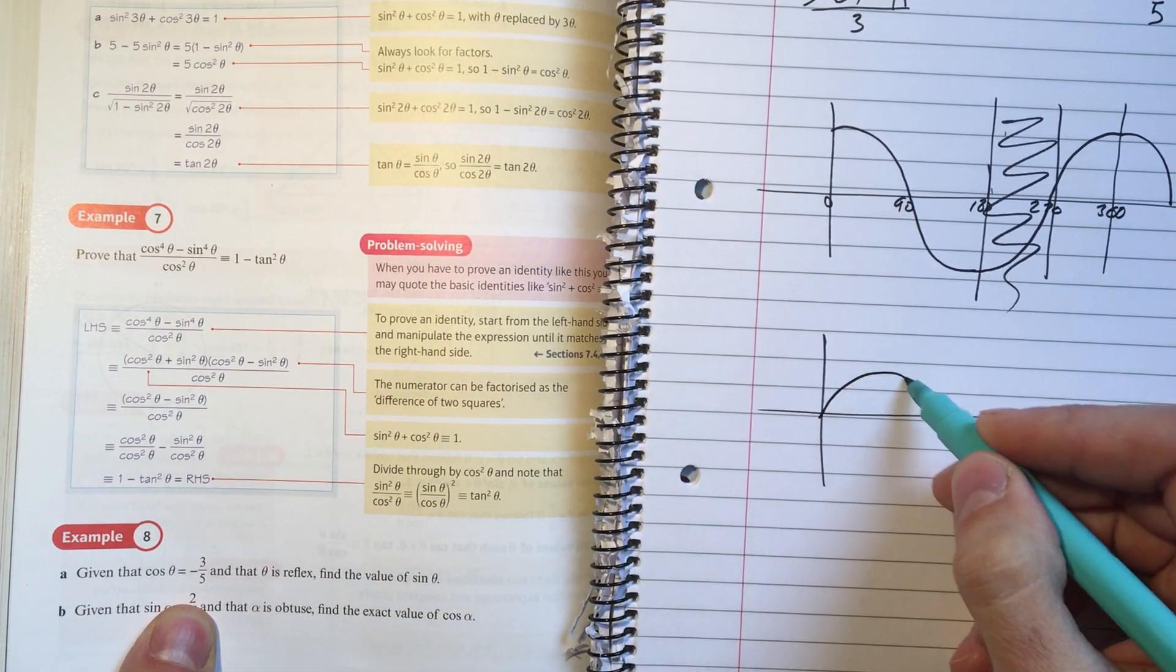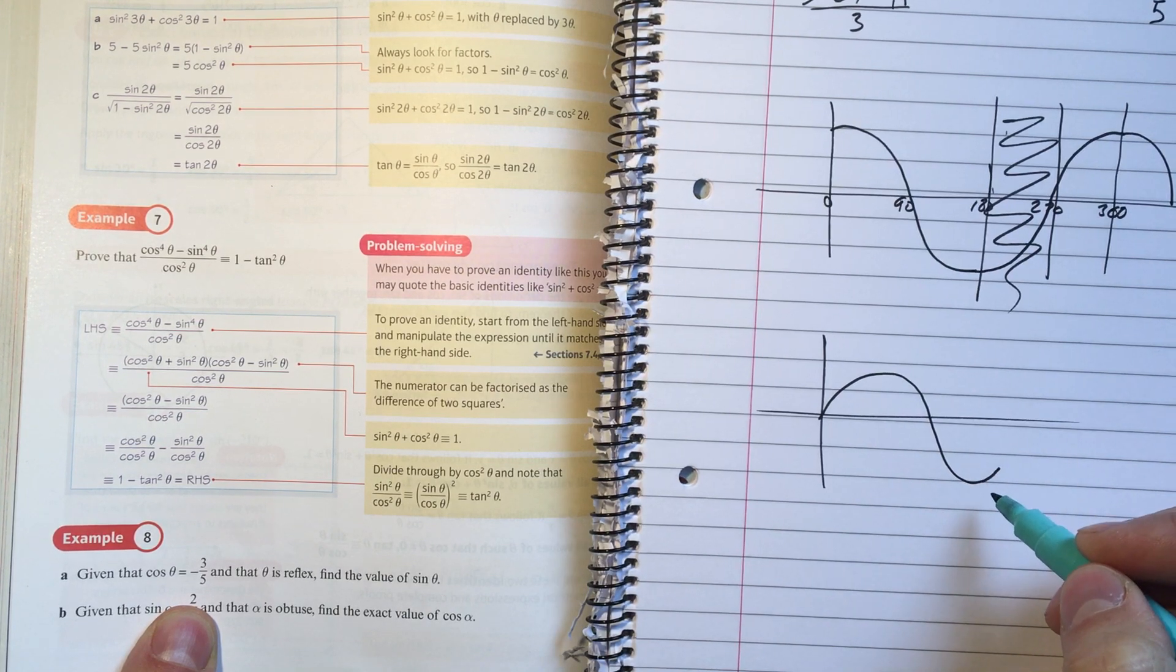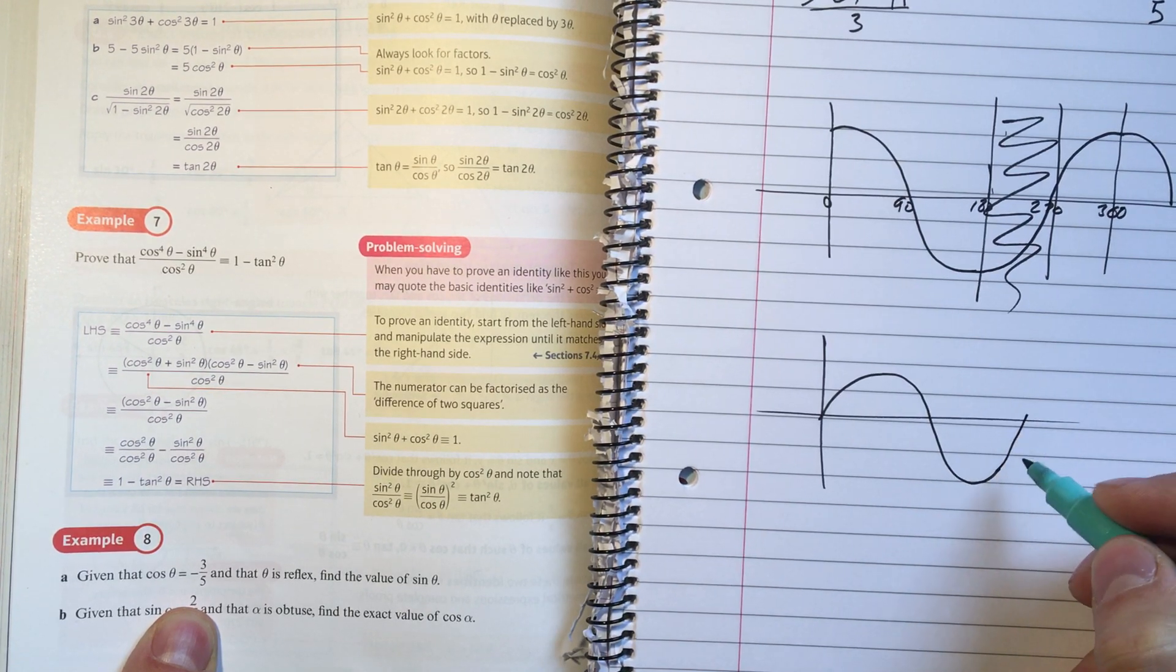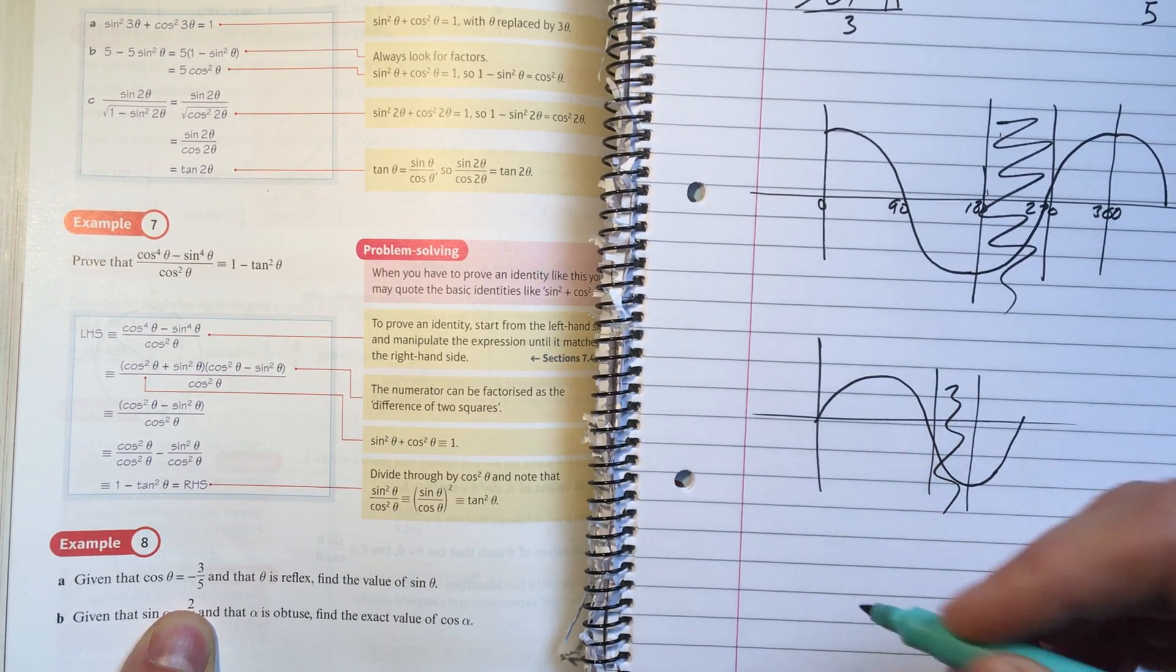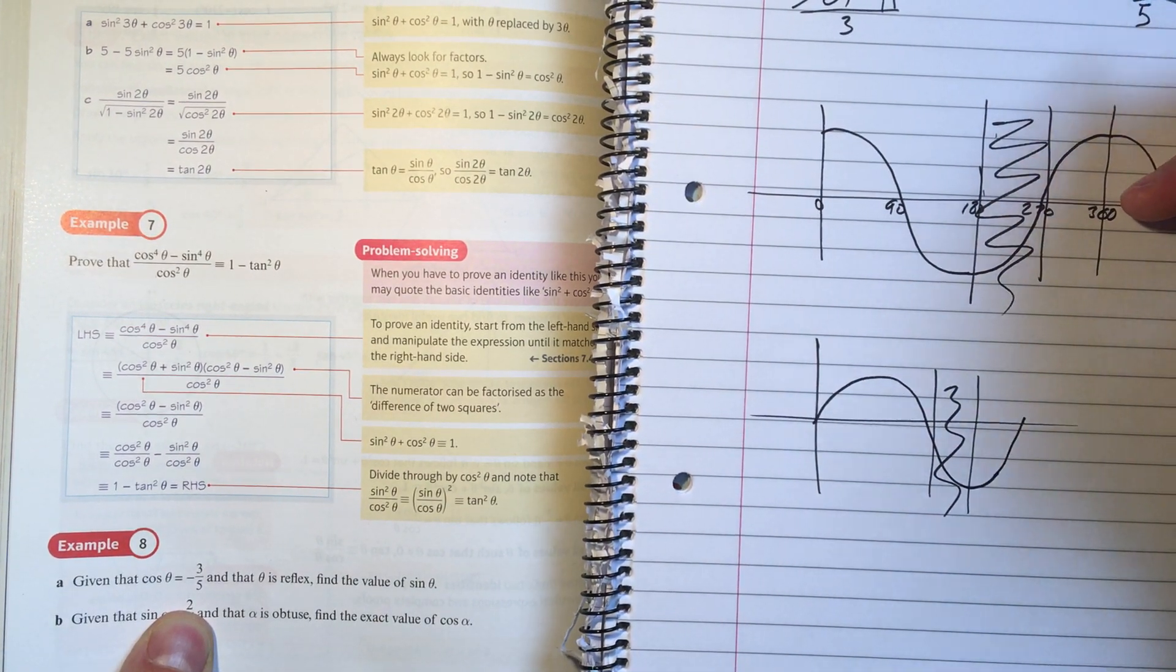And if I just think about my sine graph, between 180 and 270, the sine graph is here, so the sine graph is negative as well. So if the sine graph is negative, that must be minus four-fifths.